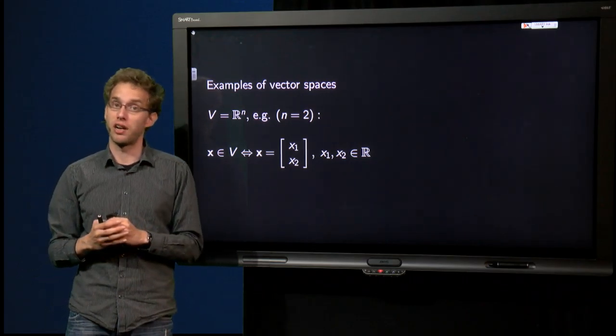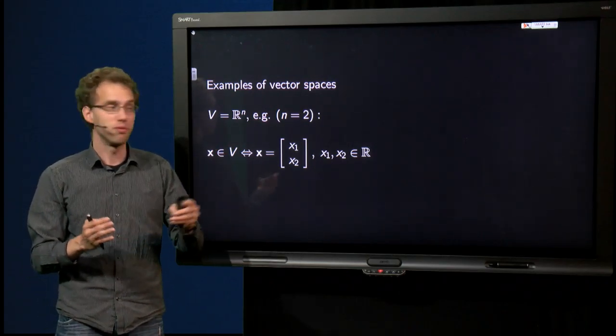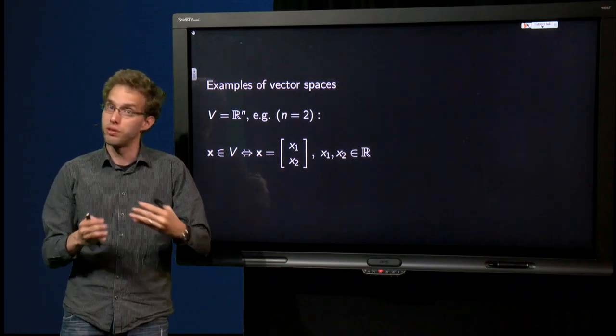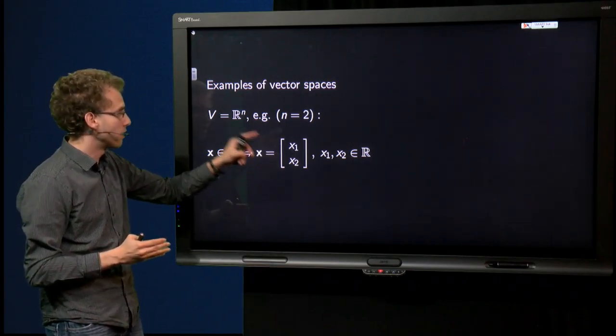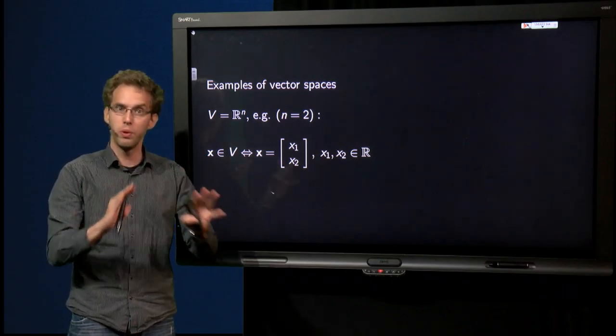Start out with our familiar R^n. For example, V is R^n, for n equals 2, the vectors are of the form [x1, x2], where x1 and x2 are numbers in R. We know those ones.